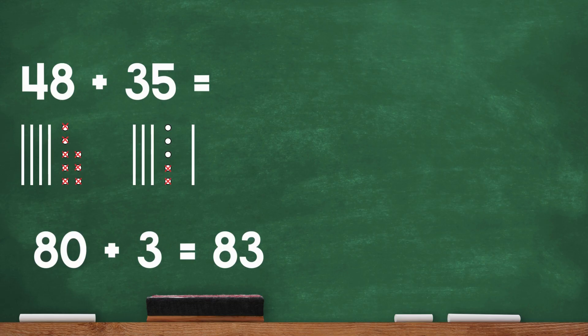Since you now have 8 tens and 3 ones, your equation should be 80 plus 3 equals 83. So, 48 plus 35 equals 83. How did you do? Let's keep practicing.